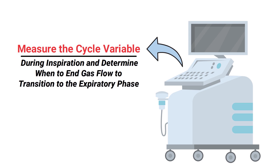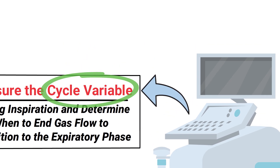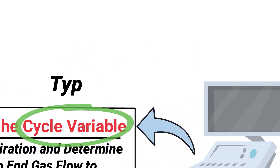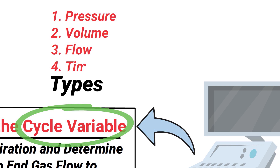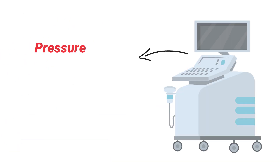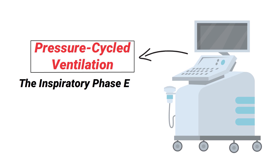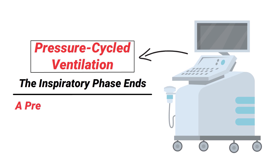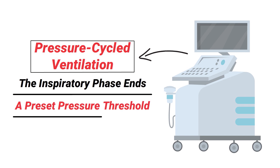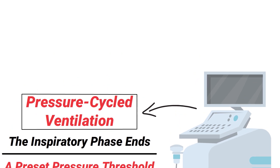A cycle variable can be influenced by pressure, volume, flow, or time. For example, during pressure cycle ventilation, the inspiratory phase ends whenever a preset pressure threshold is reached in the upper airway.